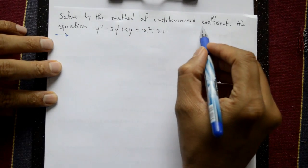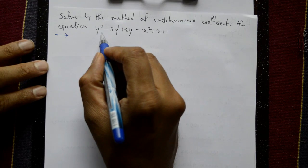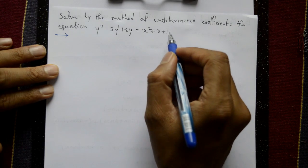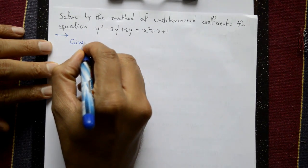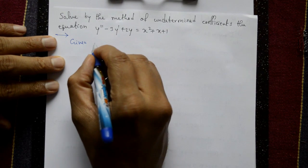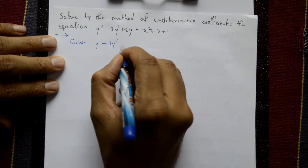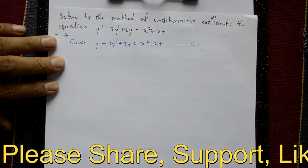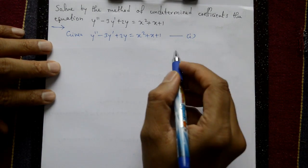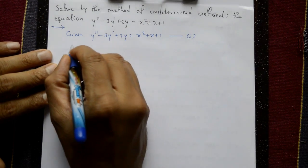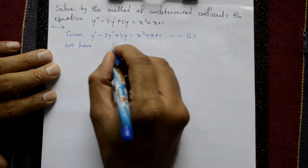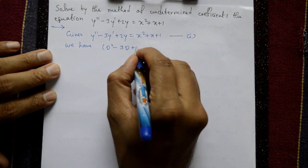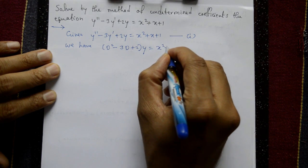Solve by the method of undetermined coefficients the equation y'' - 3y' + 2y = x² + x + 1. The complete solution is required. Given y'' - 3y' + 2y = x² + x + 1, this is equation number one. We can write this as (D² - 3D + 2)y = x² + x + 1.